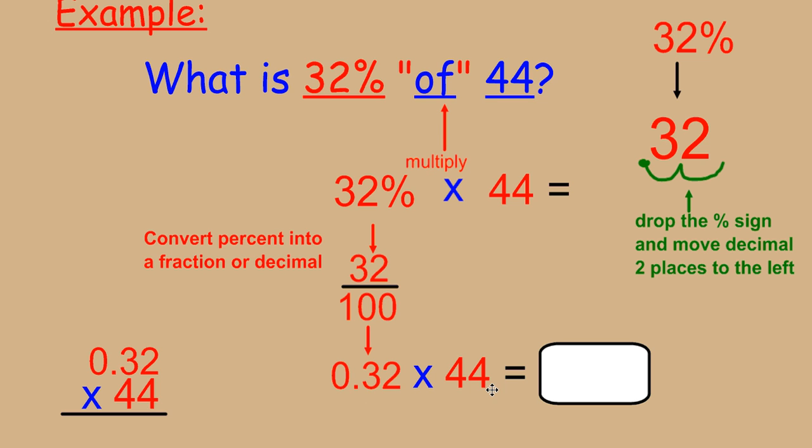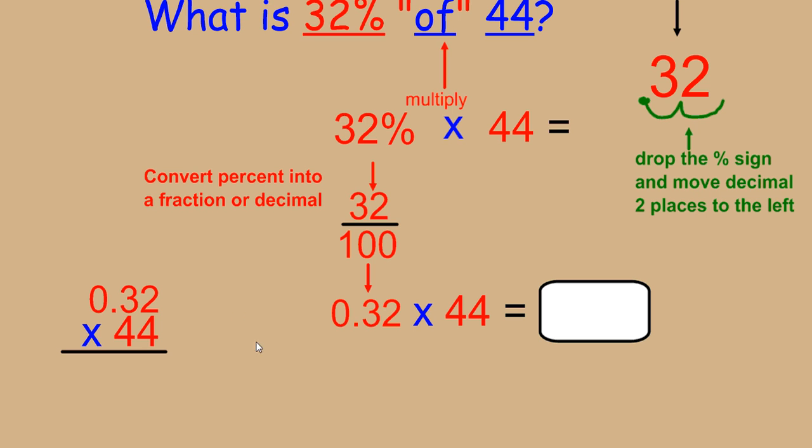Once you have it written as a decimal, we simply have to multiply. So, when I multiply, 4 times 2 is 8 and 4 times 30. If I multiply as if they're whole numbers, it would equal 120. So we get 128.